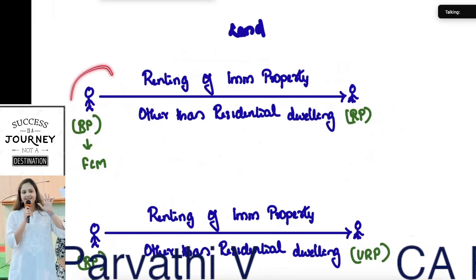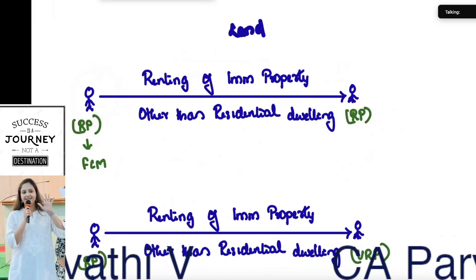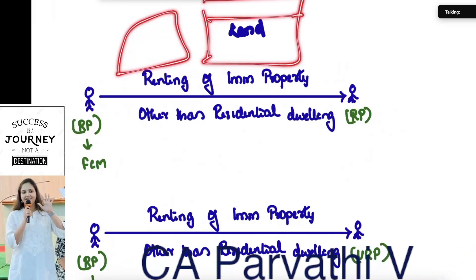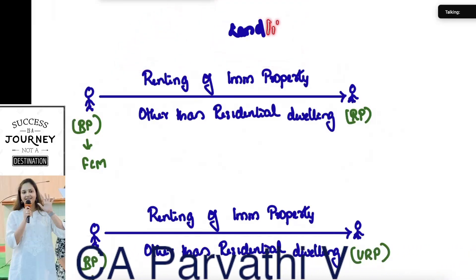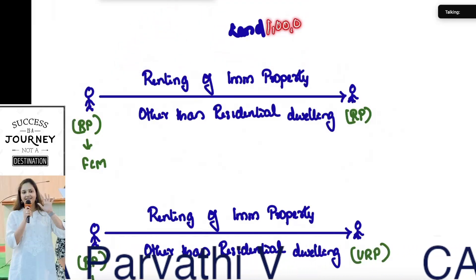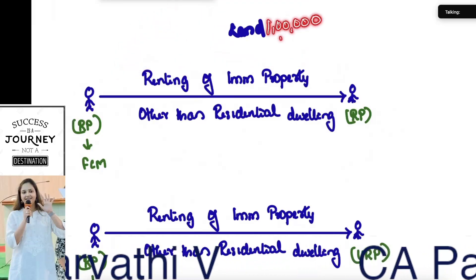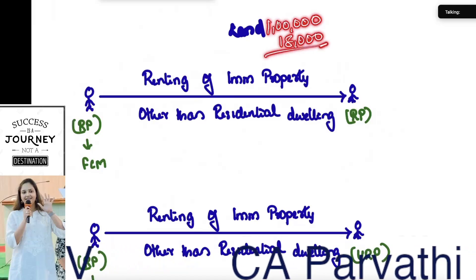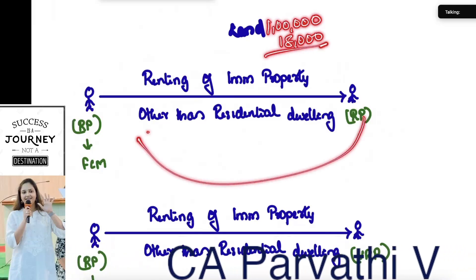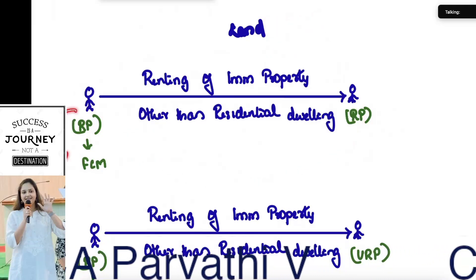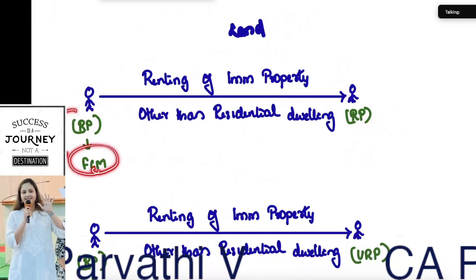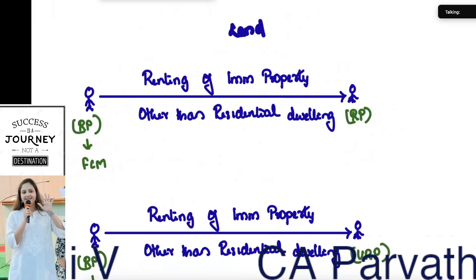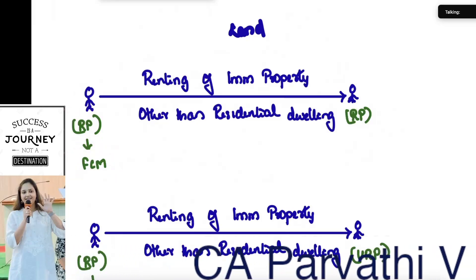Meaning the supplier will charge GST in his rent. For example, if the land rent is 1 lakh rupees, along with that he will charge GST of 18,000, collect the entire amount from the recipient and pay it to the government. So that is what is called forward charge mechanism. That is the first case.